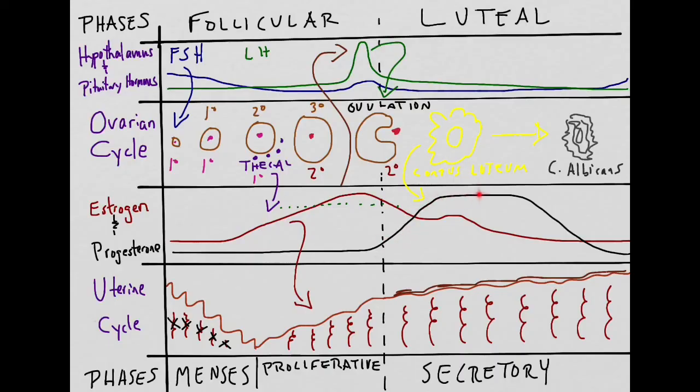After ovulation, progesterone levels will rise. Progesterone will continue the fluffing of the pillows or the building of the functional layer of the endometrium at the uterus. It will also stimulate the secretion of mucus, which will have a lot of nutrients for the potential baby.